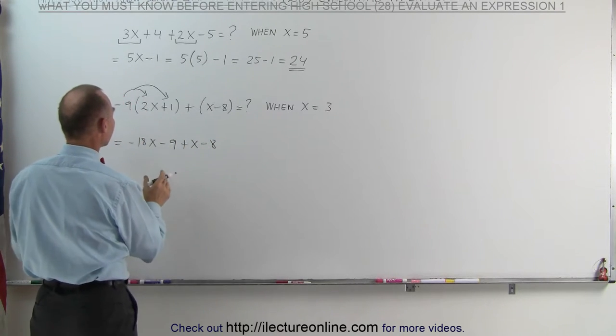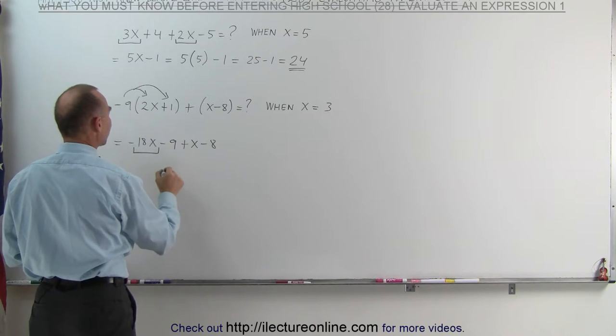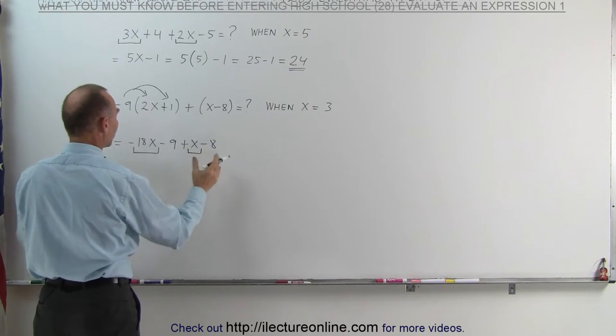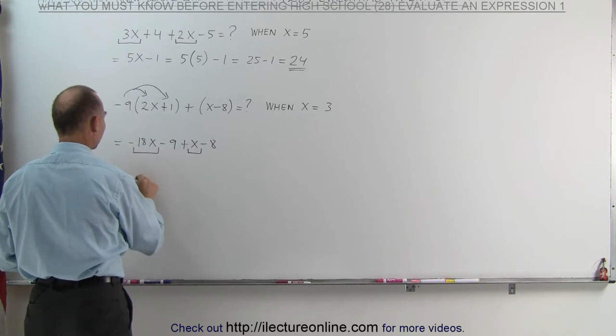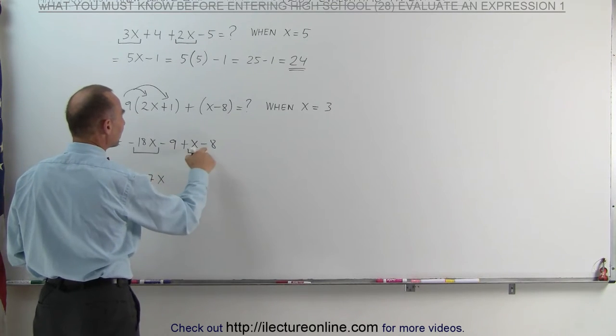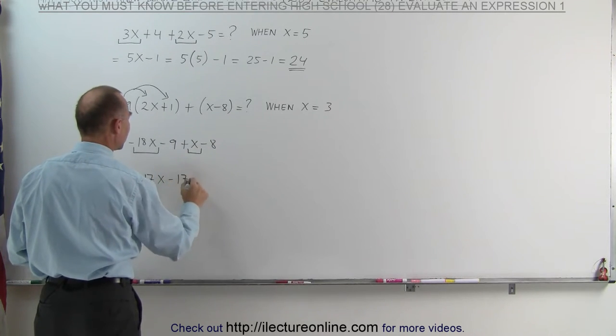Now we're going to combine like terms. We have the minus 18x and the plus x. We'll combine those together. This becomes minus 17x. And the minus 9 minus 8 is minus 17.